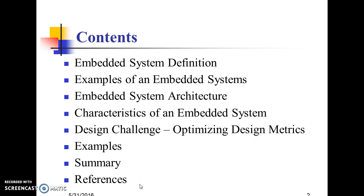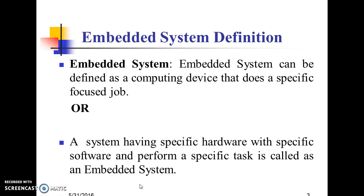Embedded System Definition: An embedded system can be defined as a computing device that does a specific focused job, or a system having specific hardware with specific software that performs a specific task.